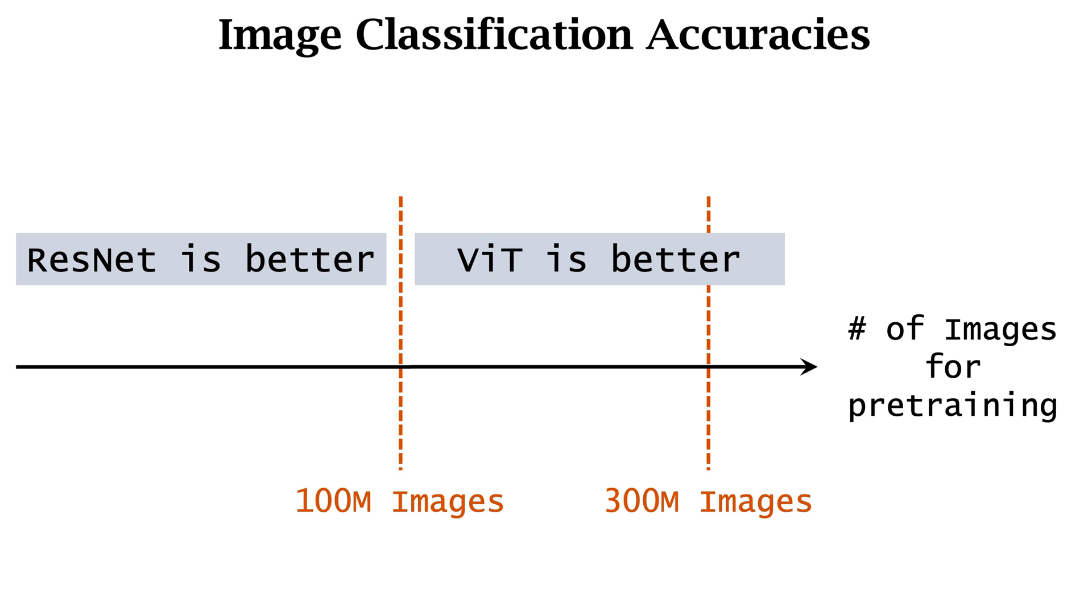In contrast, for ResNet, 100 million or 300 million images do not make a difference. The accuracy of ResNet does not improve as the number of samples grows from 100 million to 300 million.